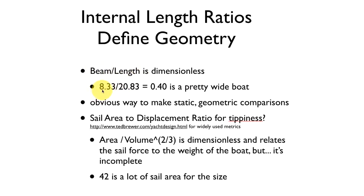On the Ultimate 20, that's 8.33 feet over about 21 feet, and that's about 0.4—about 40% as wide as it is long. That's a pretty wide boat, especially for a sailboat. This is an obvious way to make static geometric comparisons. If we don't get all these length ratios to match up, then the boat isn't of similar geometry.